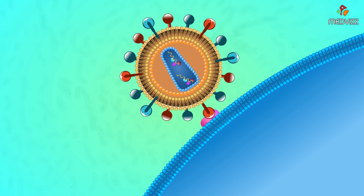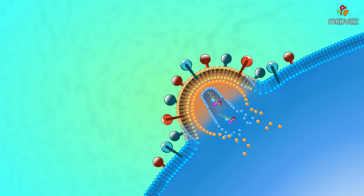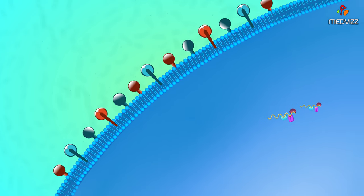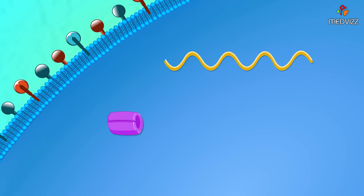After attachment, the viral envelope and host cell membrane fuse, resulting in entry of the virus into the cell. Once the RNA is released into the cytoplasm of the host cell,